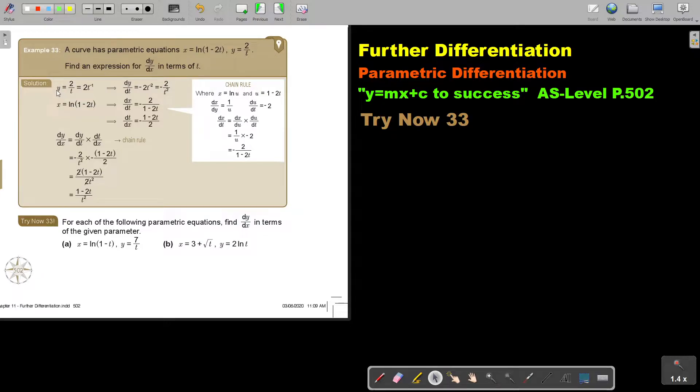But let's start with this one. Always remember, we don't work with the t in the denominator. We bring it up, and that's why it becomes negative 1. And then if we differentiate, after we differentiate, we can bring it down again.